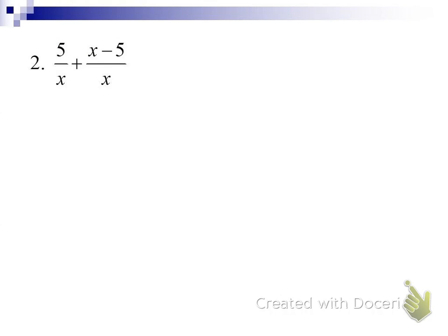Same thing goes for rational expressions — we start putting variables in here. The denominators must be the same, and if they are, we can just add the numerators. Here, these two rational expressions have a common denominator already. 5 and negative 5 give you 0, so we get x in the numerator. Divide out x over x and we get 1. It's that simple — not any more complicated with rational expressions.